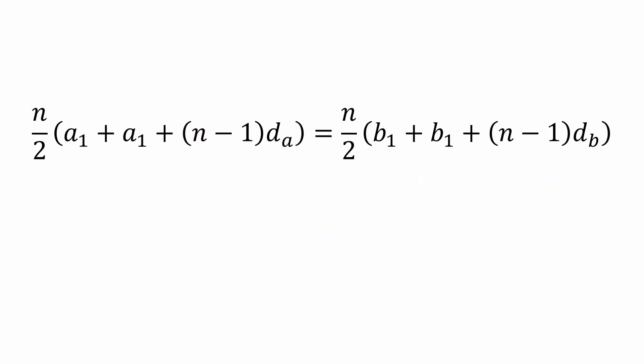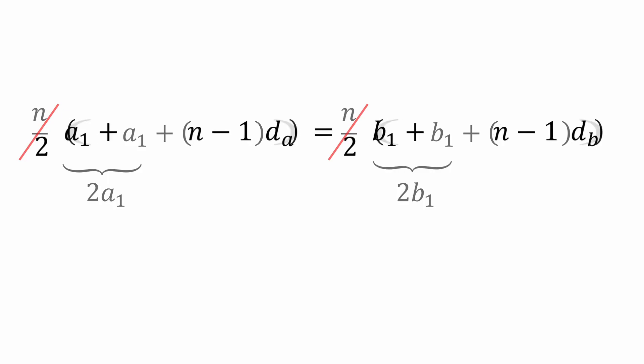So now our expression looks like this. After we cancel out the n over 2s on both sides and combine the two A1s and the two B1s, we'll be left with the following.